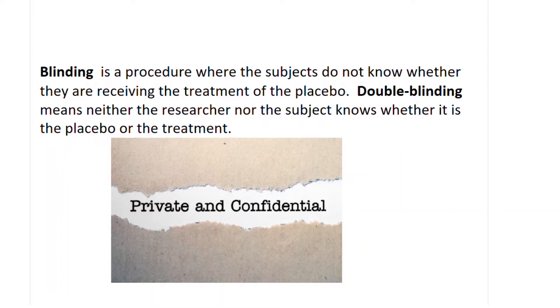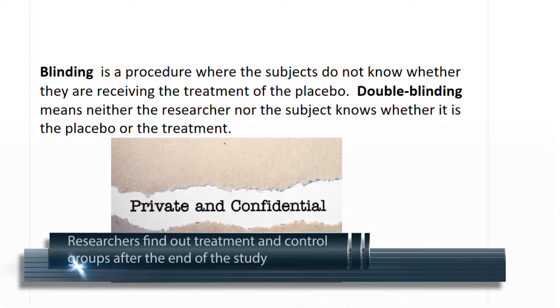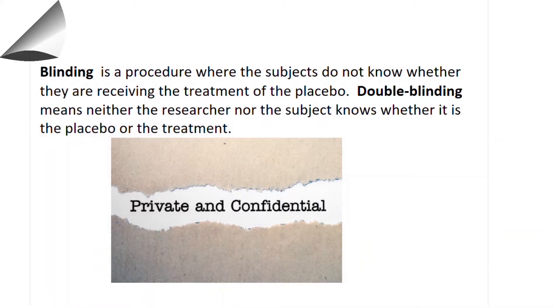Blinding is where the subjects don't know whether they're getting the treatment or the placebo, and double-blind experiments, neither the experimenter nor the subjects know whether they're getting the placebo or the treatment. And this is really the preferred methodology by researchers: double-blind studies.